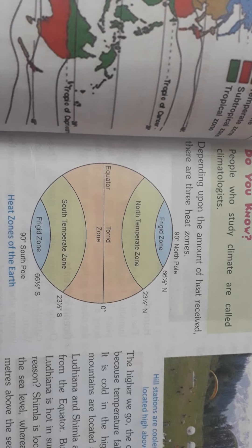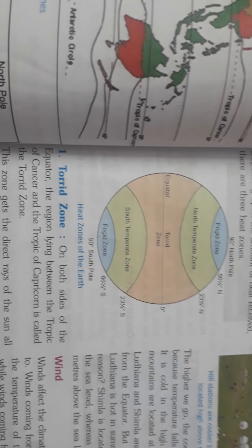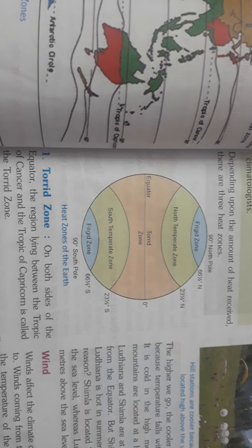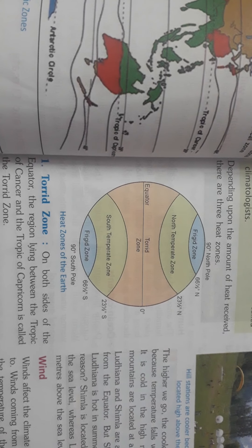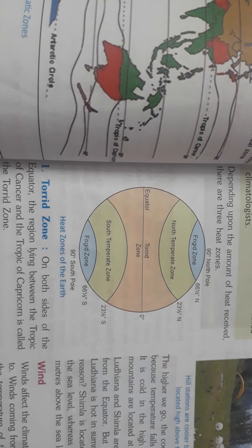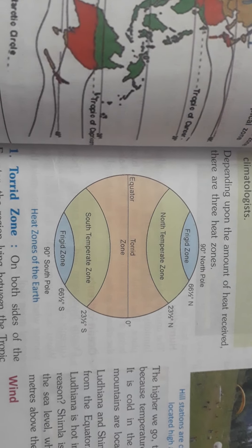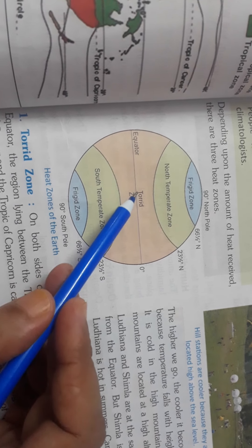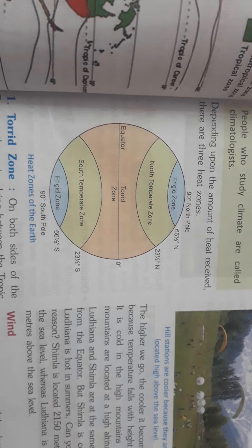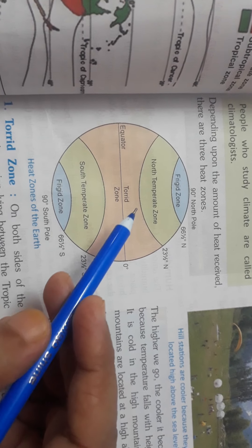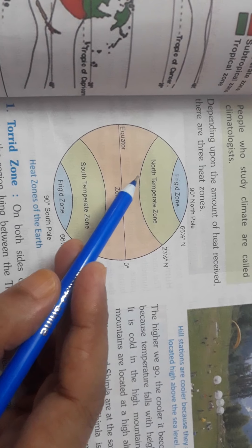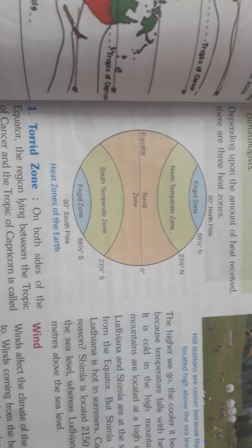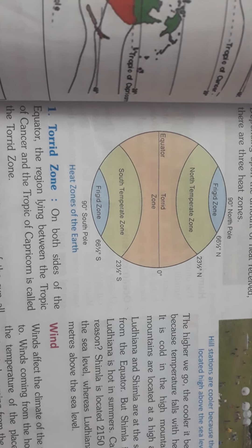The first one is the torrid zone. Torrid means hot. This zone is also called the tropical zone. This is one of the hottest zones on the earth's surface because places on the equator or very close to the equator get direct rays of the sun. As you can see in this diagram, the torrid zone is near the equator and it lies between the Tropic of Cancer and the Tropic of Capricorn.